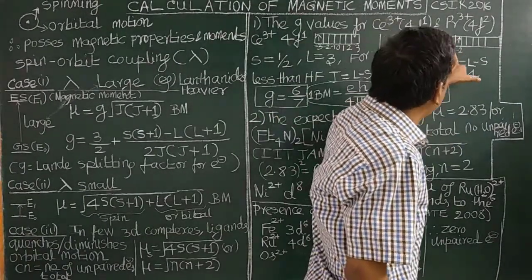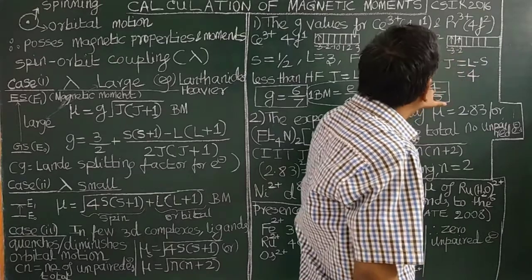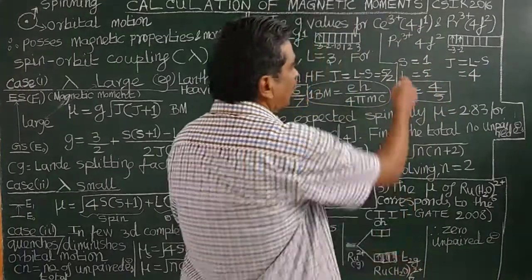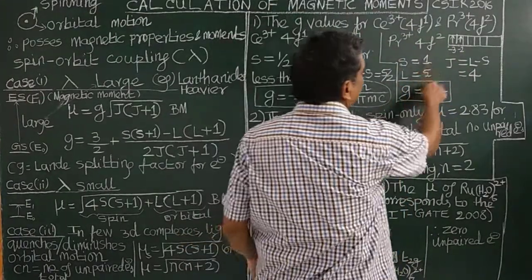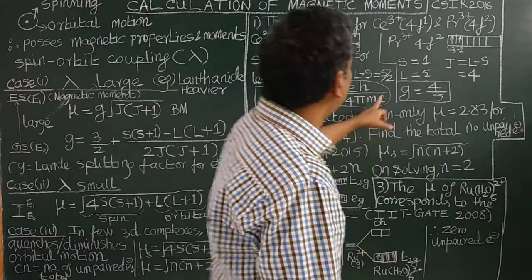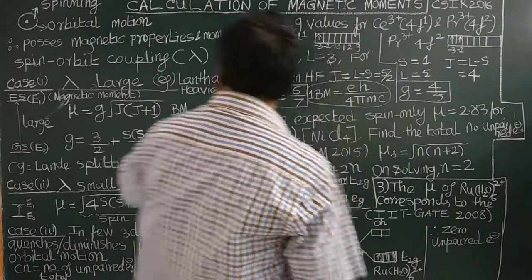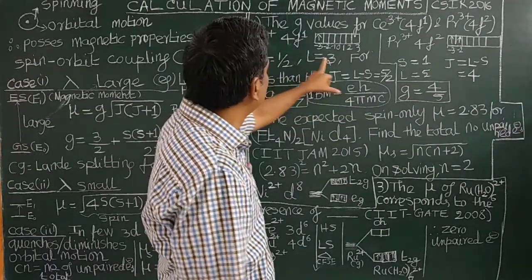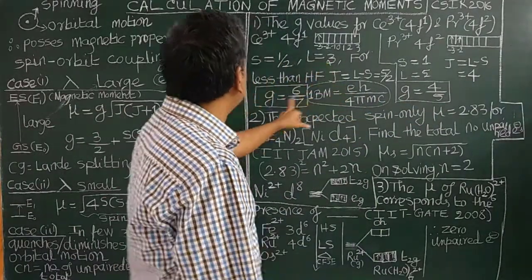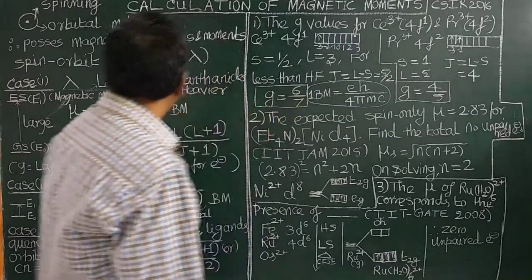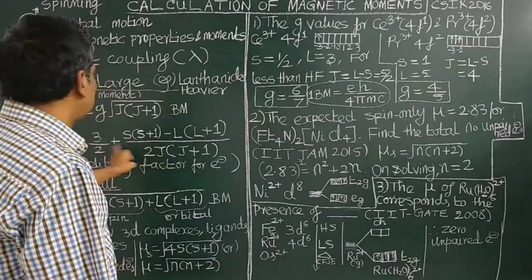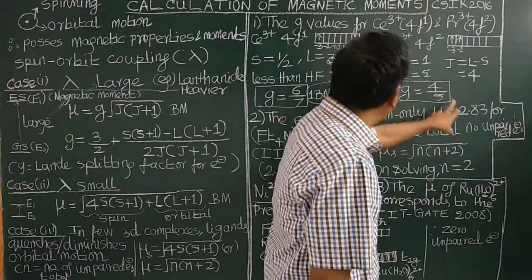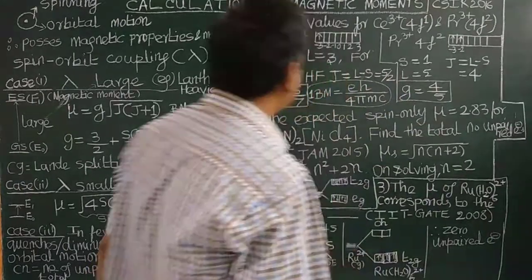Substituting the values into the formula, we calculate g equal to 6/7 for one case and g equal to 4/8 for another.